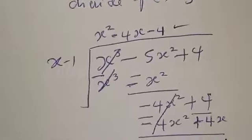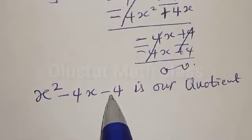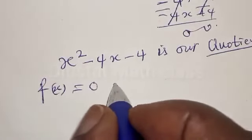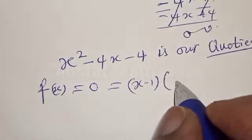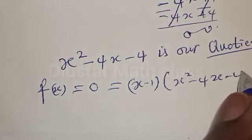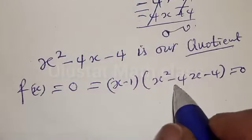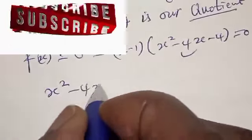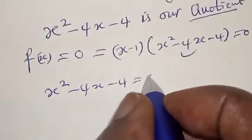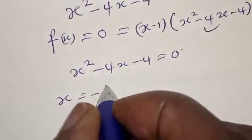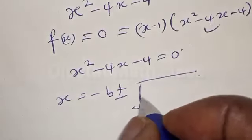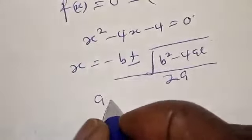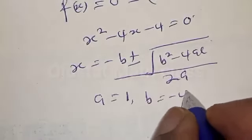Therefore our quotient becomes s squared minus 4s minus 4. So f of s equal to 0 becomes s minus 1 times s squared minus 4s minus 4 equal to 0. Now let's solve the quadratic equation s squared minus 4s minus 4 equal to 0 using the quadratic formula.